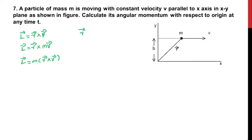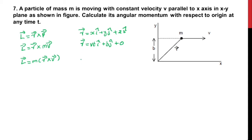The position vector r vector equals x·î plus y·ĵ plus z·k̂. The x component: the particle is moving with velocity v, so in time t the x position is vt, giving vt·î. The y position is b, giving b·ĵ. The z component is 0. So the position vector is r = vt·î + b·ĵ + 0·k̂.